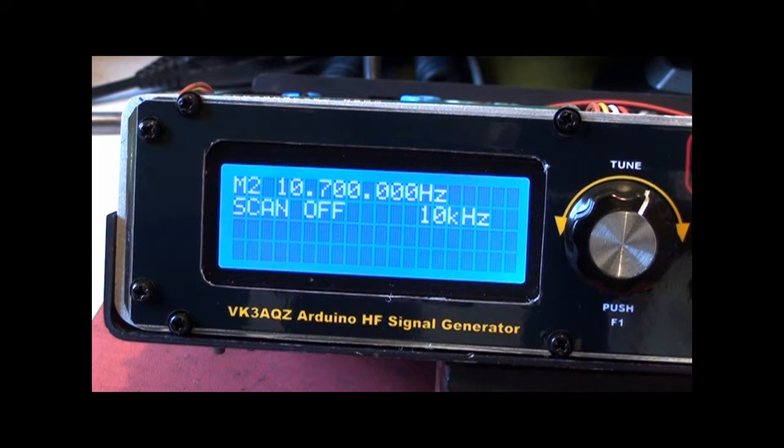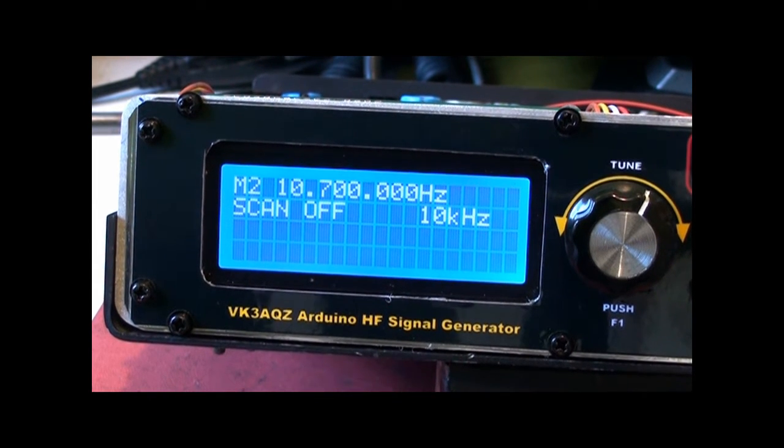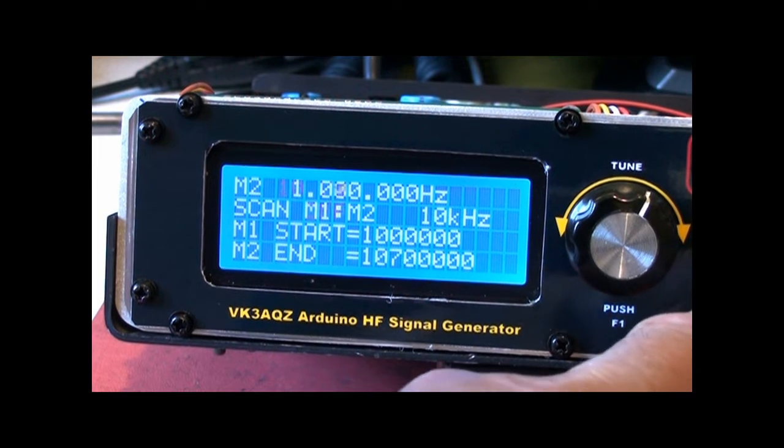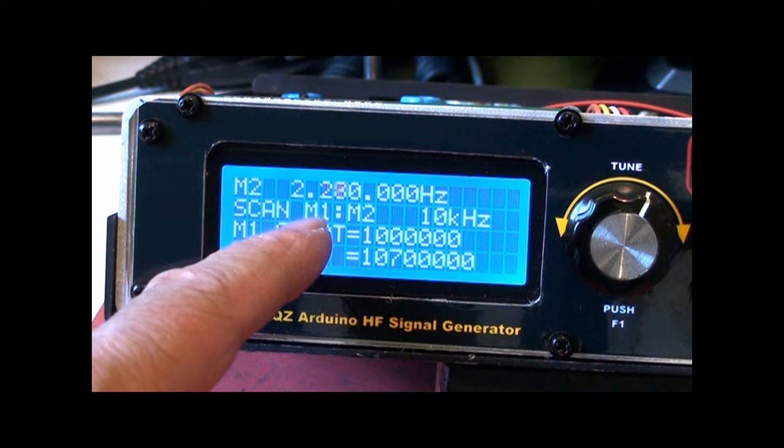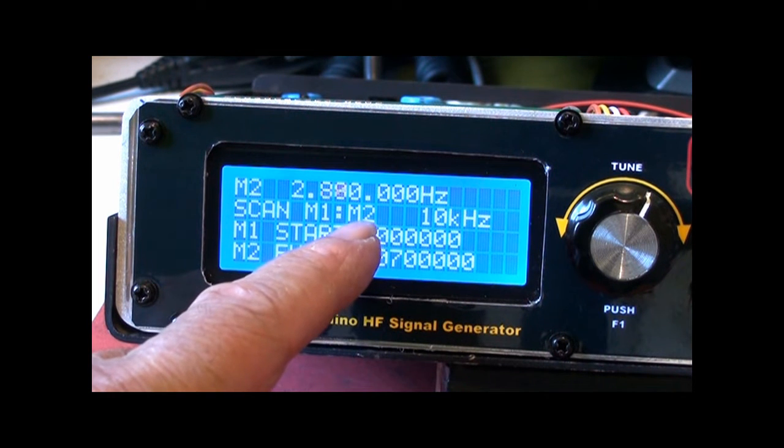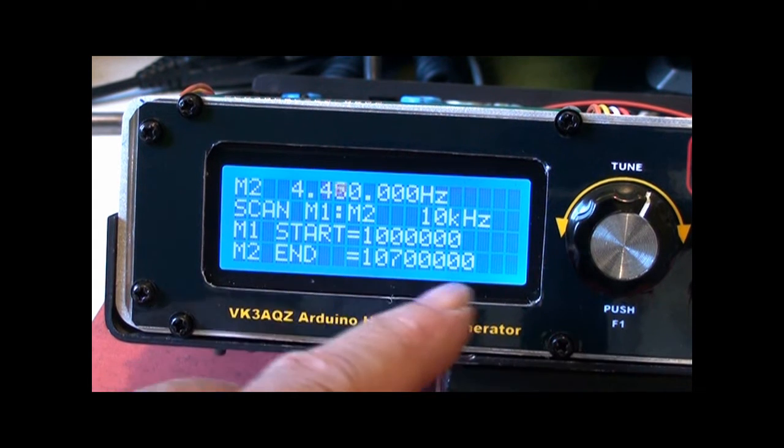This particular little signal generator has a sweep facility which I'm going to turn on. It's designed to sweep from the contents of memory 1 to the contents of memory 2. Memory 1 is currently at 1 meg, memory 2 is at 10.7 megs.